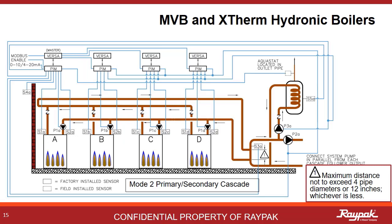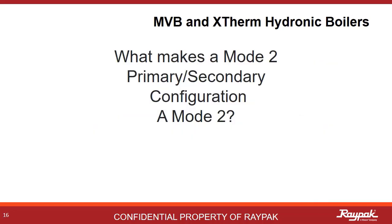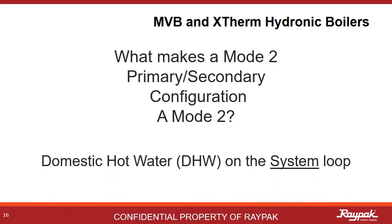Mode 2 is also possible in cascade. As with the single boiler system, the indirect domestic hot water tank is out on the system loop. When in cascade, there can be only one master boiler — the A boiler. The other boilers are the follower boilers. Always apply reverse return logic to plumbing cascaded systems — the first boiler out to the system is the last in line on the return. What makes a Mode 2 primary-secondary a Mode 2? You have an indirect domestic hot water system on the system loop.